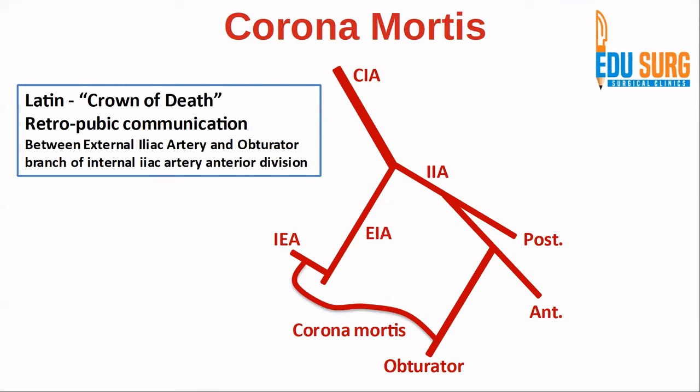Corona mortis, which we have discussed in our hernia video, is Latin for 'crown of death.' It is a retropubic communication between the external iliac artery — which gives the inferior epigastric artery — and the obturator branch of the anterior division of the internal iliac artery. Accessory obturator artery branches or communications between the obturator and inferior epigastric arteries can lead to massive blood loss if injured, which is why it is called corona mortis. Remember that this communication can occur in both artery and vein.